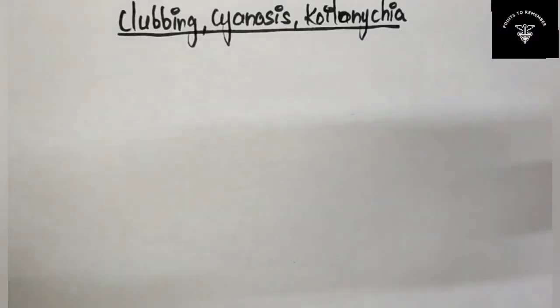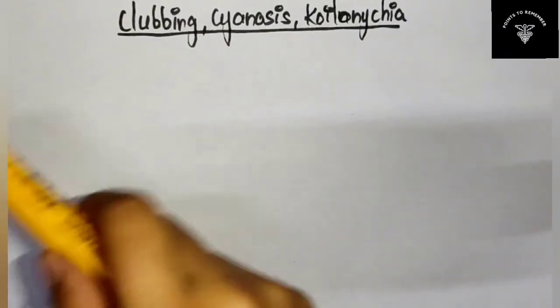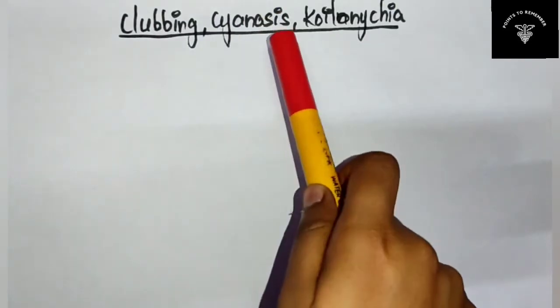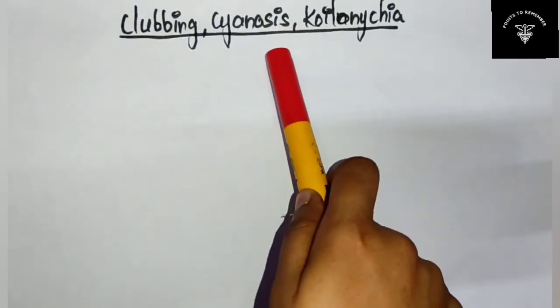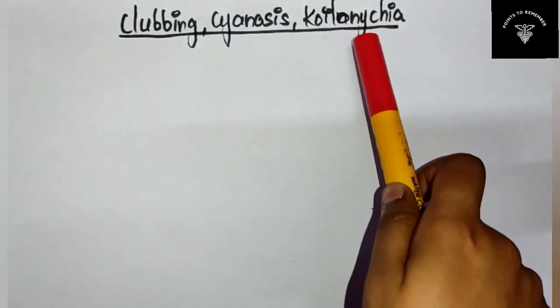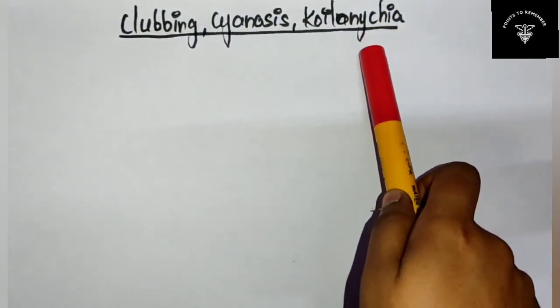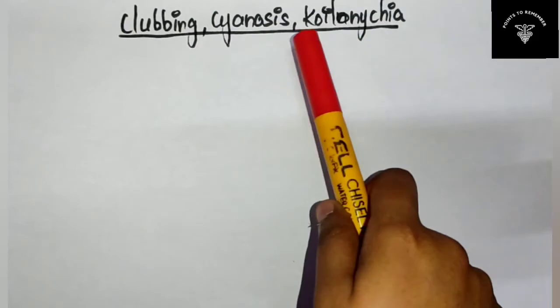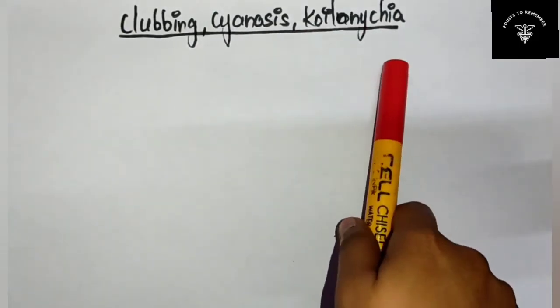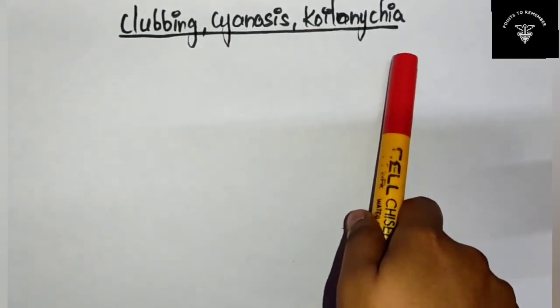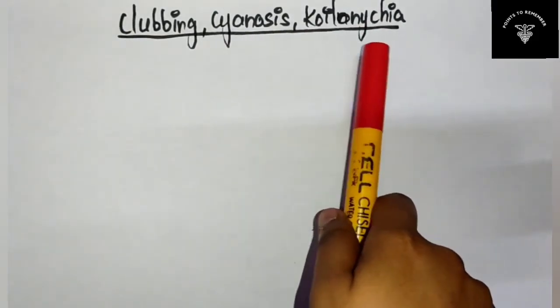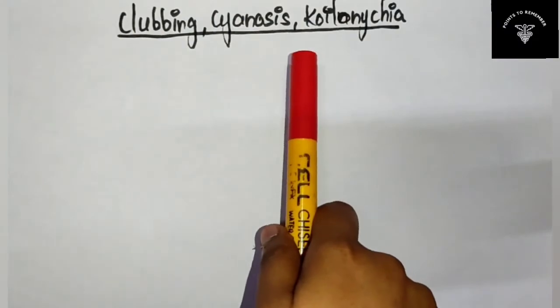Hello everyone, welcome to my channel. Today we are going to learn three important terms that you should know: clubbing, cyanosis, and koilonychia. Now let's see what these terms are.